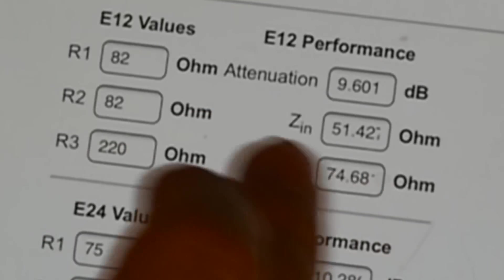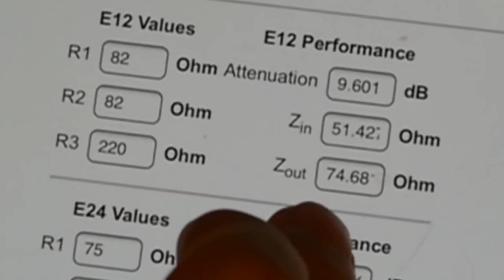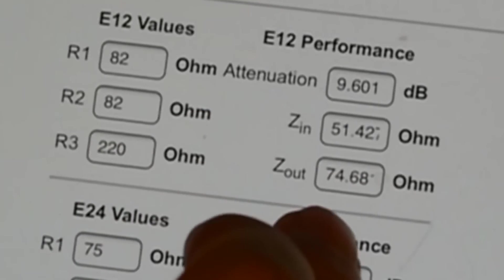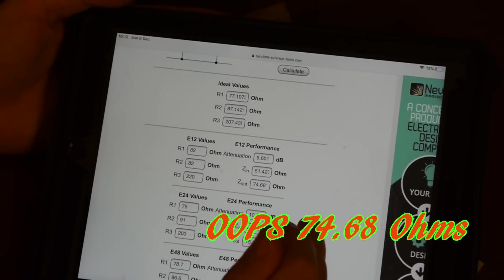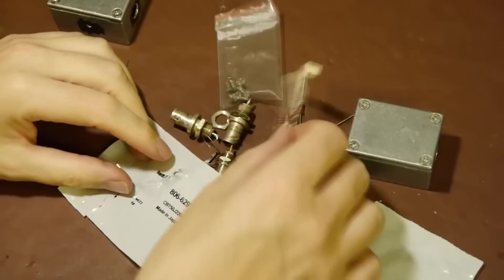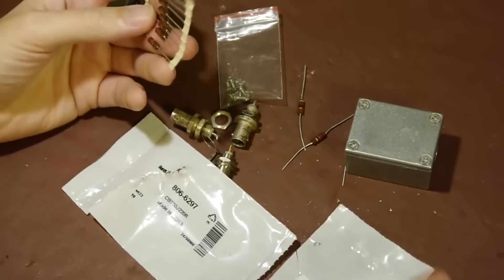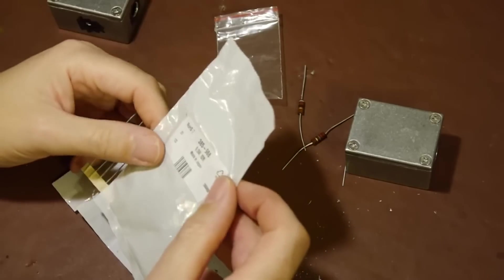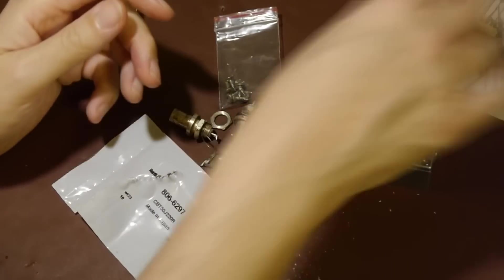We're not going to get exactly 50 ohms, we're going to get 51 ohms. We're not going to get exactly 75 ohms, we're going to get 64.68. Again the type of work that I'm doing, exact calibration, exact results aren't necessary. So here's our resistors that we talked about earlier. There's the 220s and here's the 82 ohms.